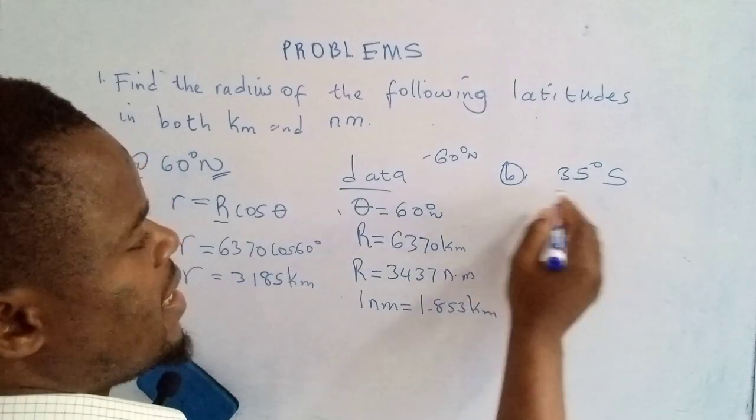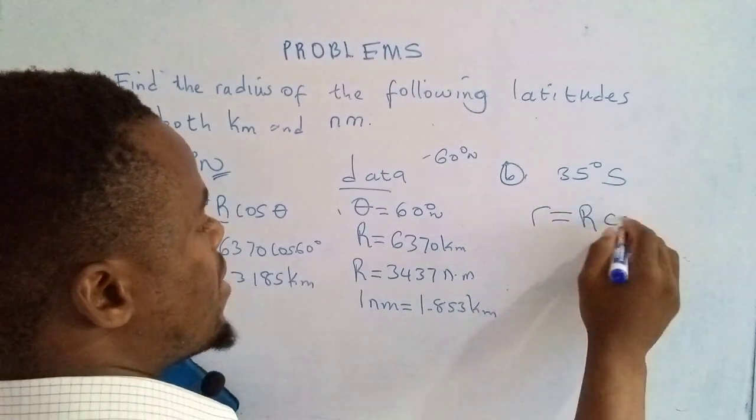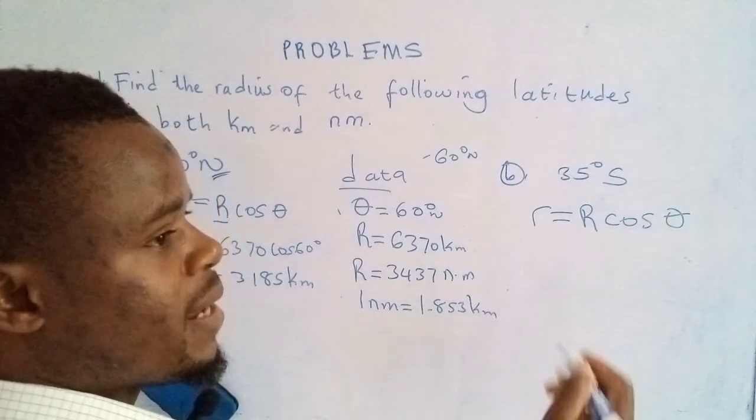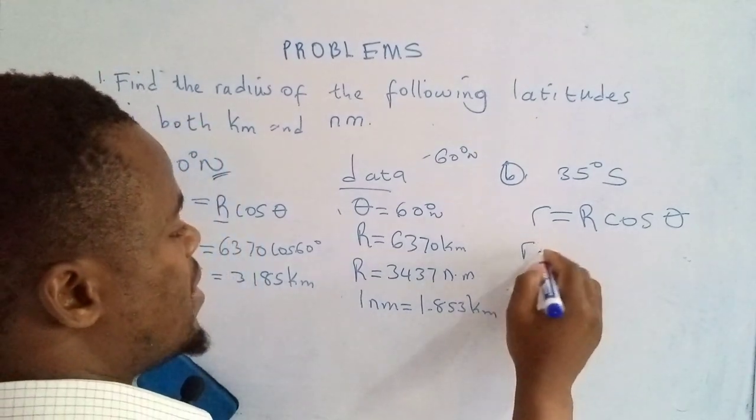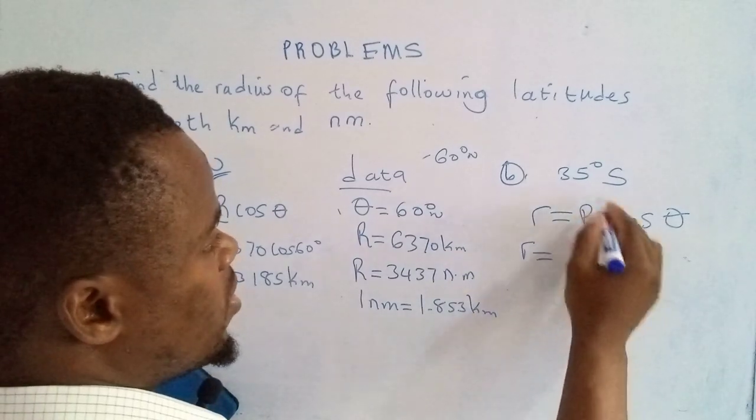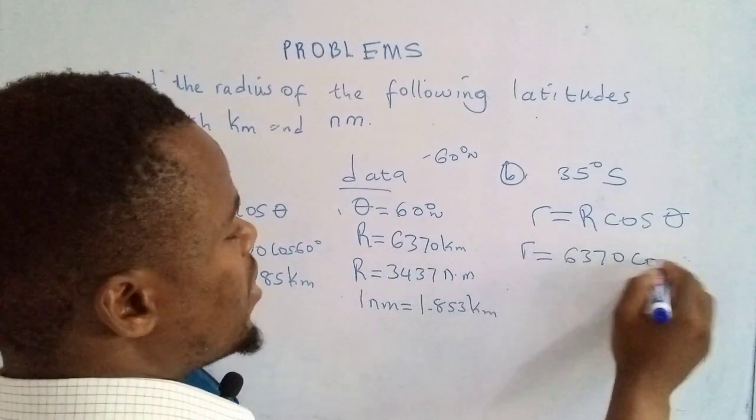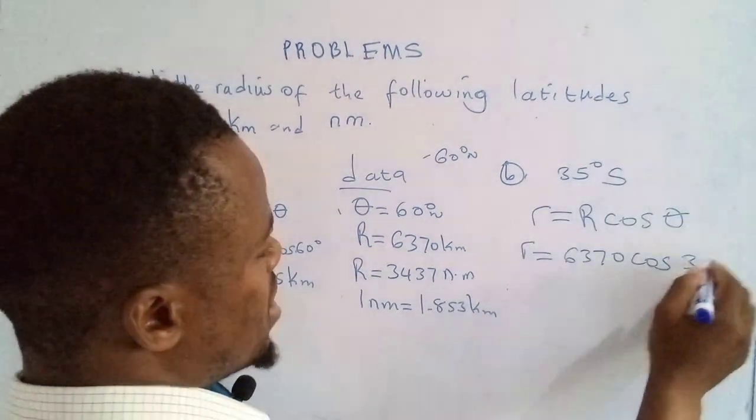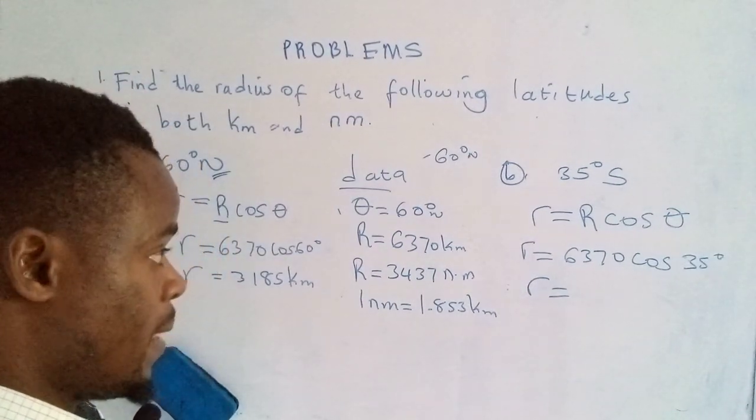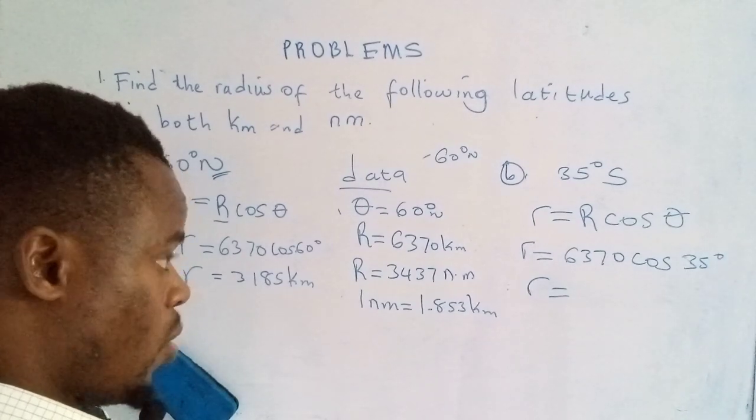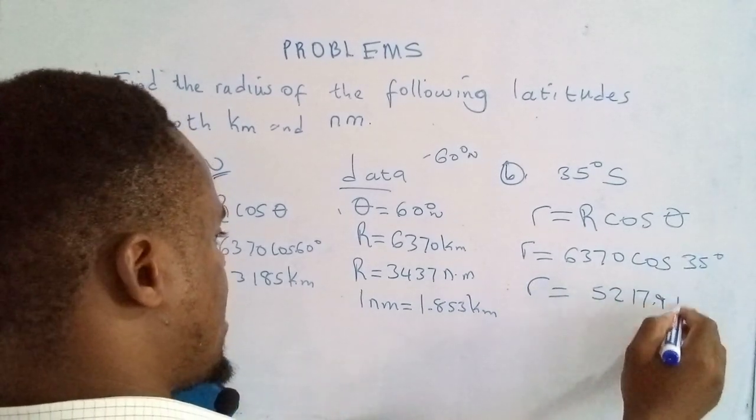What's the radius of this latitude? The radius of the latitude is given by R cos theta. Capital R denotes the radius of the Earth. Radius of the latitude is equal to, that's 6370, then cos we plug in the latitude under consideration at 35 degrees. So radius of the latitude is 6370 cos 35. That gives me 5217.998.